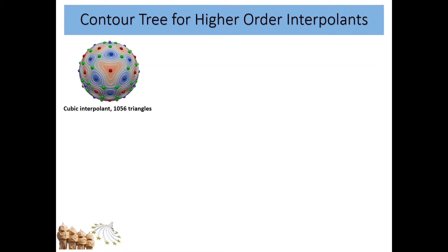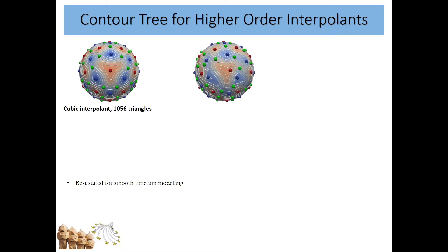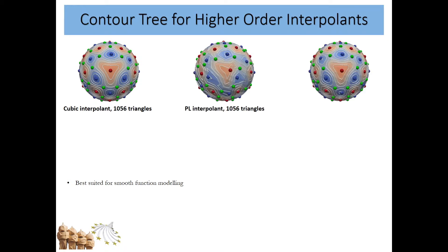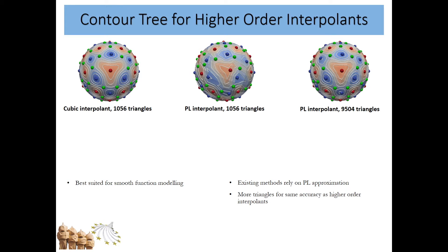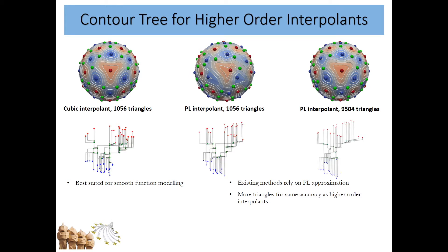Scientific data like heat dissipation on a thermal conductor is intrinsically smooth and is best modeled by higher-order interpolants. Existing approaches for topological analysis of such data requires costly piecewise linear approximations. We present an algorithm to compute a topological structure called the contour trees for polynomial interpolants of all degrees.